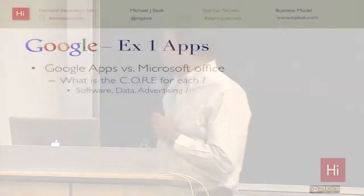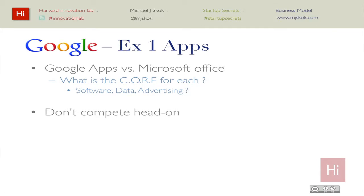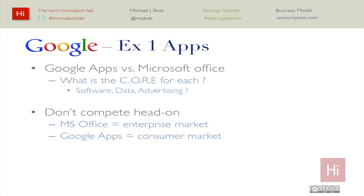Google Apps versus Microsoft Office: Office is the dominant product. It's hard to imagine now, but five or ten years ago it was Office — Microsoft Word, Microsoft Excel. They dominated; there was no competition at all. So how do you compete with a competitor that has 90-100% of the market? First thing: don't compete head-on. Microsoft Office was the enterprise market — everyone in business used it. So what did Google Apps do? Went in the opposite direction — start with consumers, start with home users.